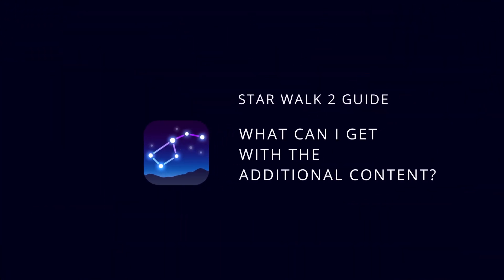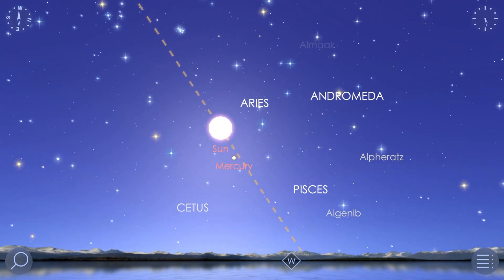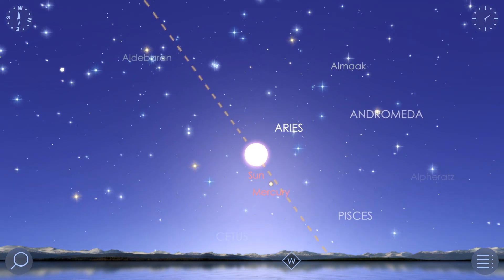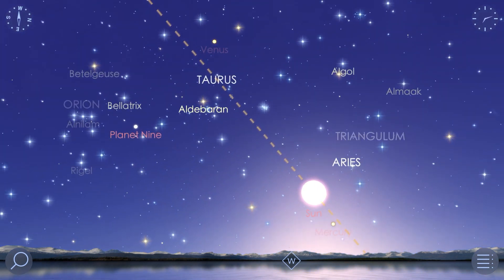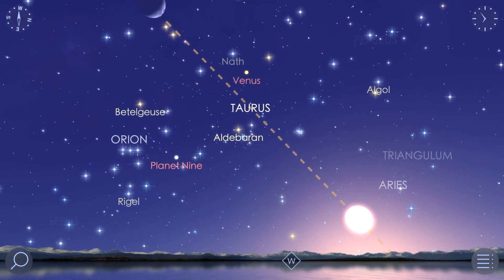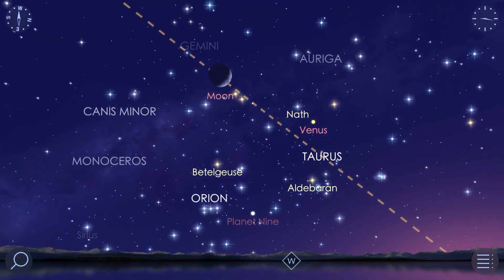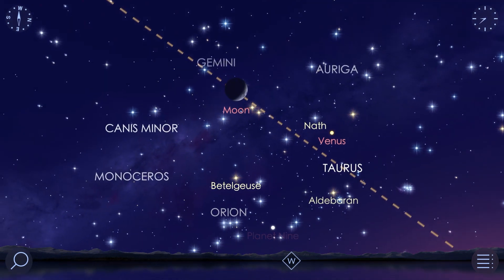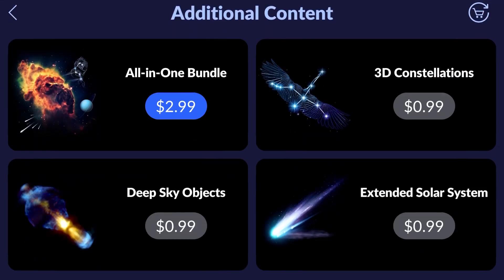Starwalk 2 offers a basic set of features for observing the sky. If this is not enough and you want to upgrade your stargazing experience, you can get additional content via in-app purchases. To view the list of additional features and items, tap the menu icon in the lower right corner of the screen and choose Additional Content.